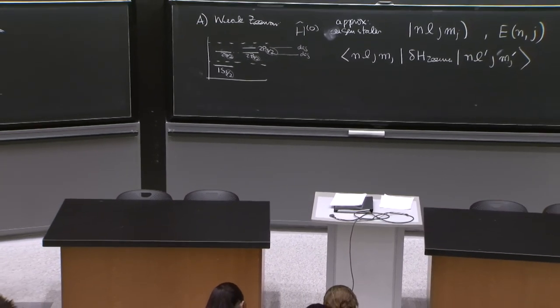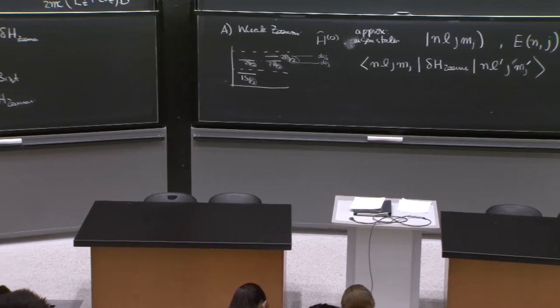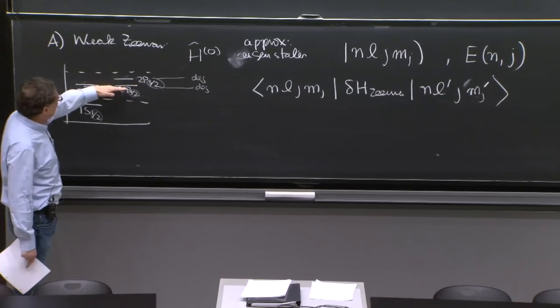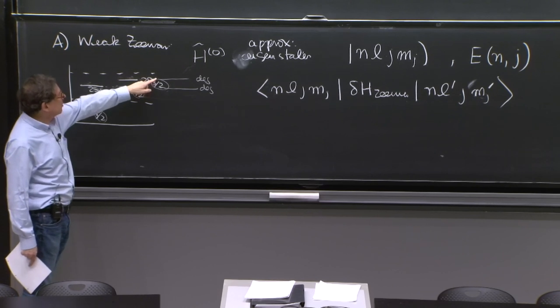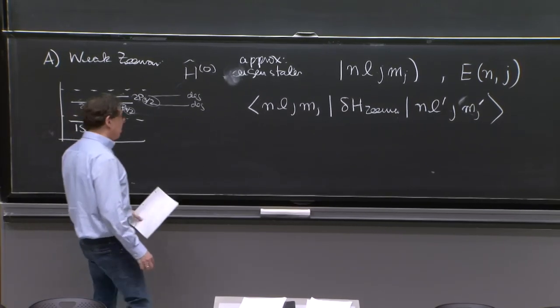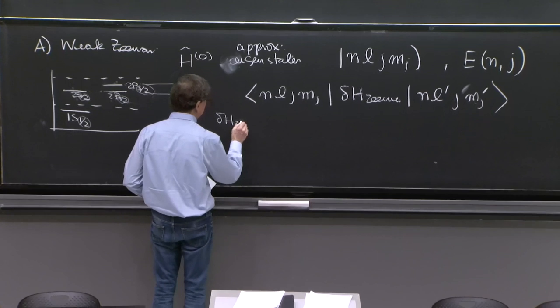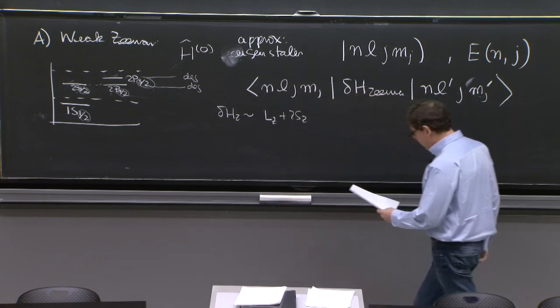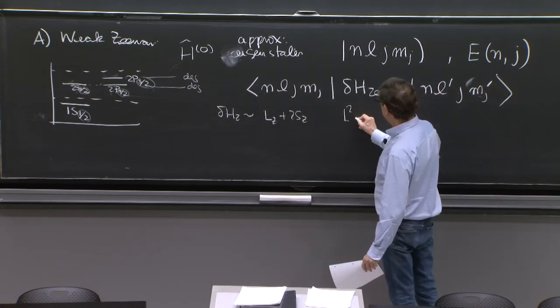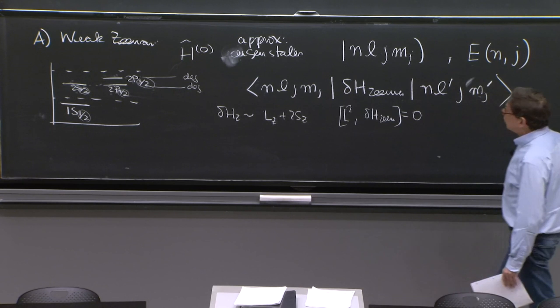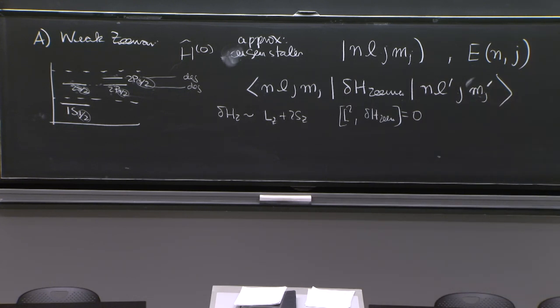And in principle, we may have to diagonalize a matrix like that by looking at the degenerate spaces. If you're doing the level 2, you would have to discuss these four states here. You would have to discuss these other four states. Happily, we don't have to do that much because, as usual, delta H Zeeman is proportional to Lz plus 2Sz. And this commutes with L squared with delta H Zeeman. L squared commutes with any L operator. It certainly commutes with any S operator. They don't even talk to each other.